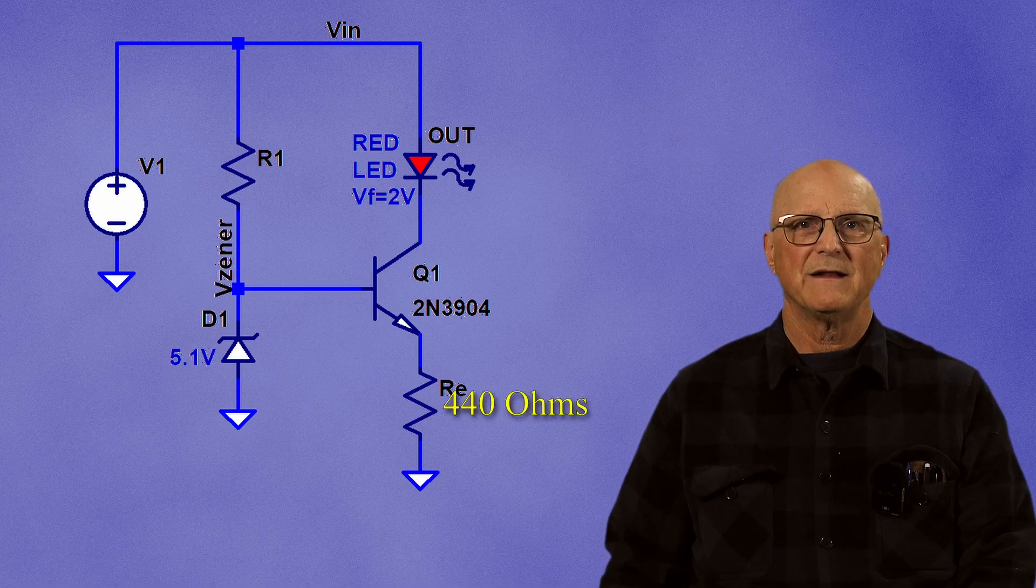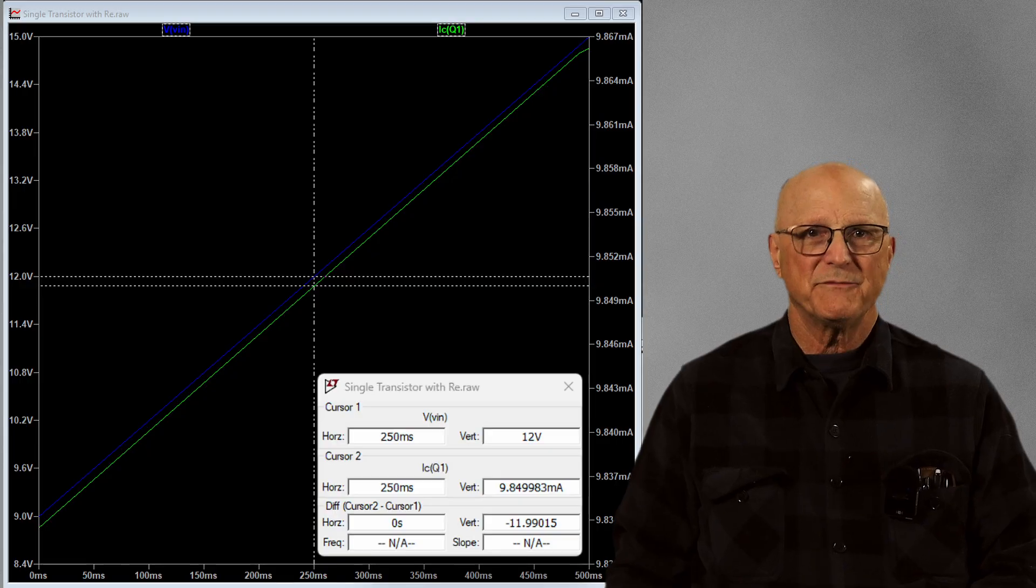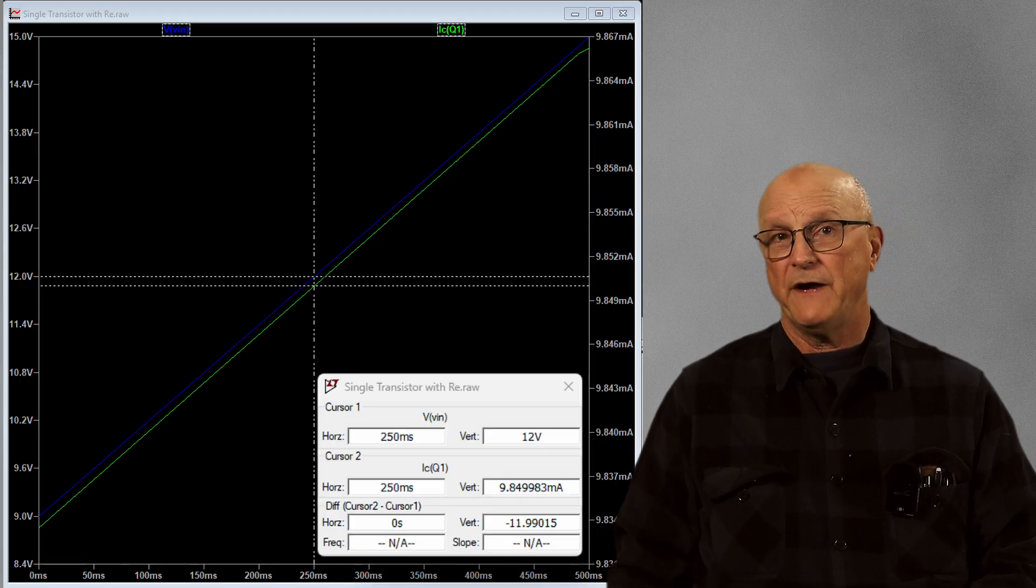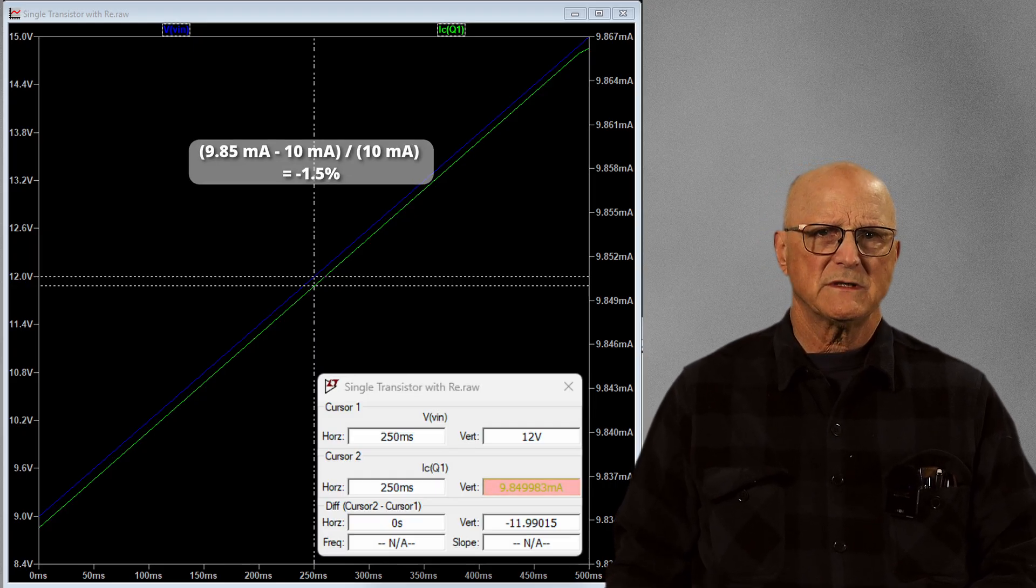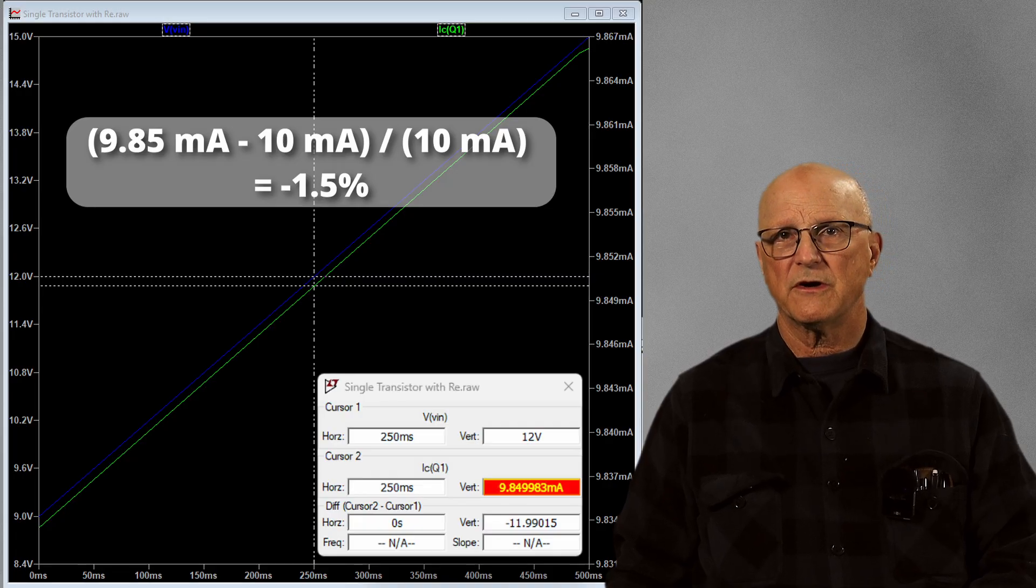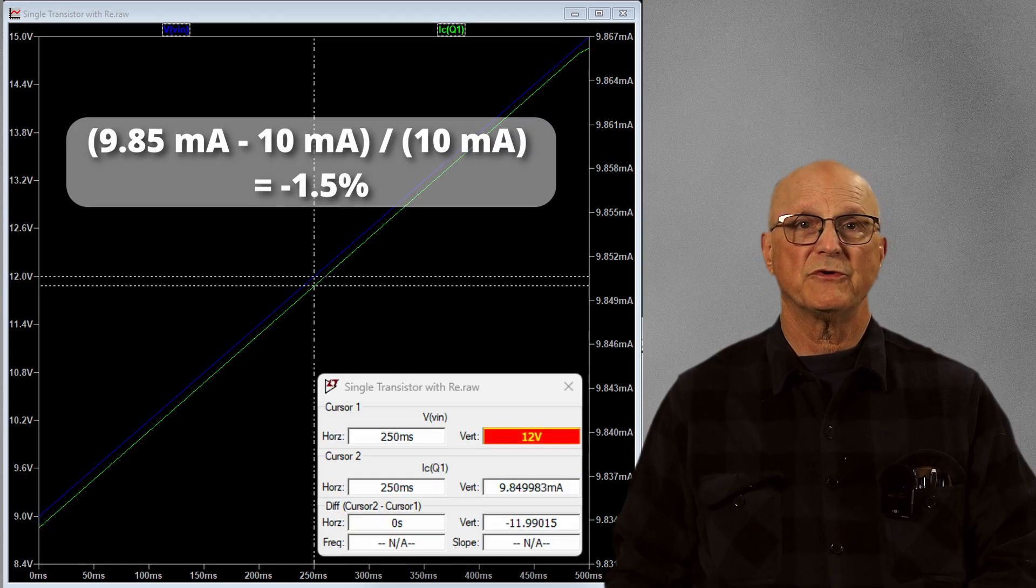Now, let's see how this performs in LT Spice. So, here are the simulation results. Now, I forced LT Spice to use a current gain of 160, which is more in keeping with the current gains of the transistors that I've been characterizing here on the bench. I noticed that the resulting collector current is 1.5% low when the input voltage is at its nominal 12 volts.